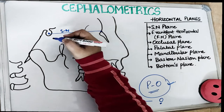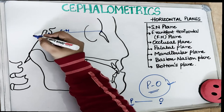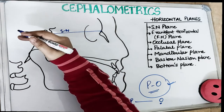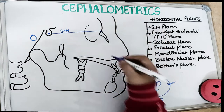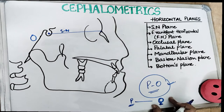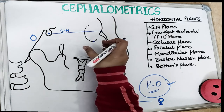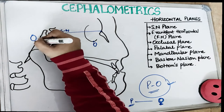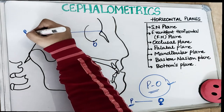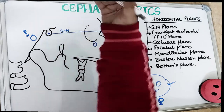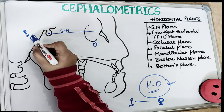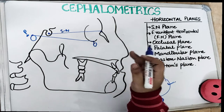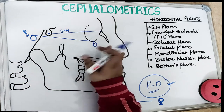The porion point is the top of the external auditory meatus — P for peak, the superior part of the external auditory meatus. The O, which you can look at as a zero, signifies the lowest thing — so O is the lowest point on the floor of the orbit. P is the highest point on the external auditory meatus — peak — and O is the lowest point on the orbit floor. The line drawn from porion to orbital is our Frankfurt Horizontal Plane, a very important plane for many analyses.